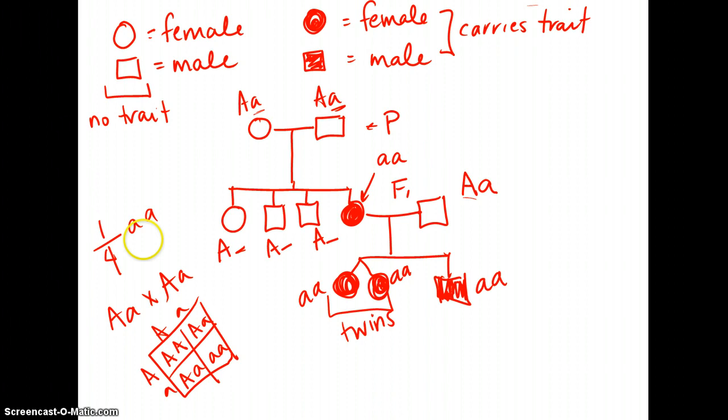And so just by looking at the phenotype, at the pedigree of this whole family, looking at the P generation, the F generation, and the F2, we were able to tell what the genotype is of every individual.